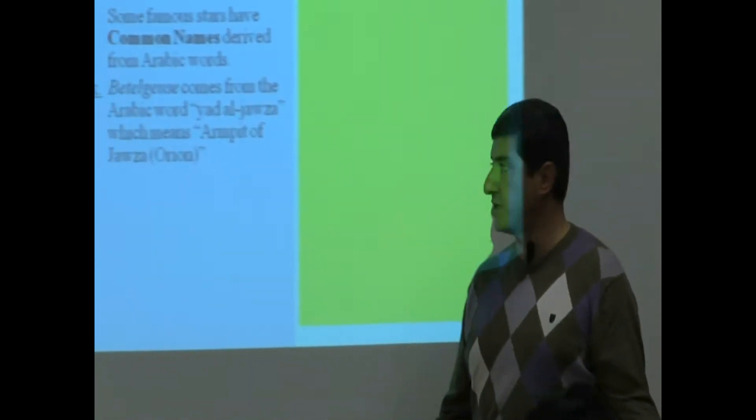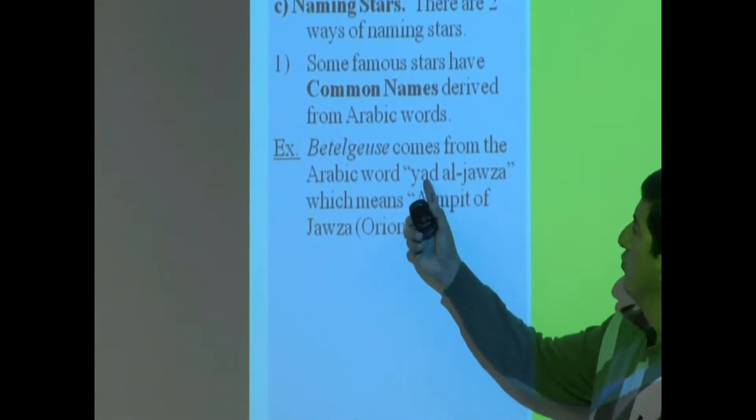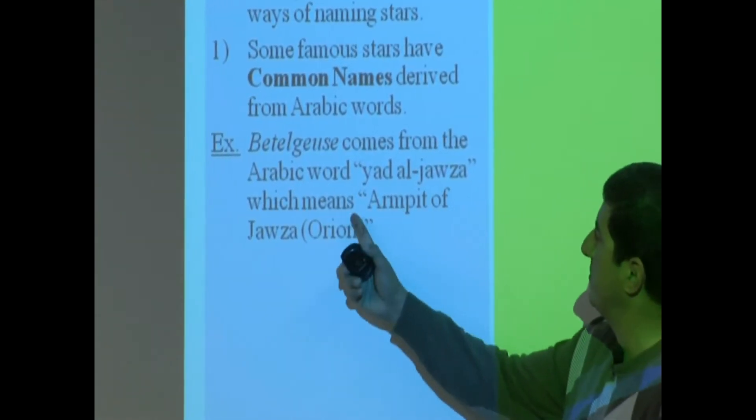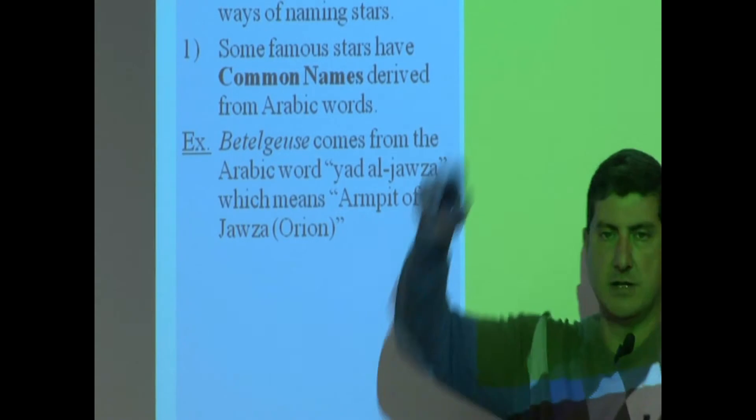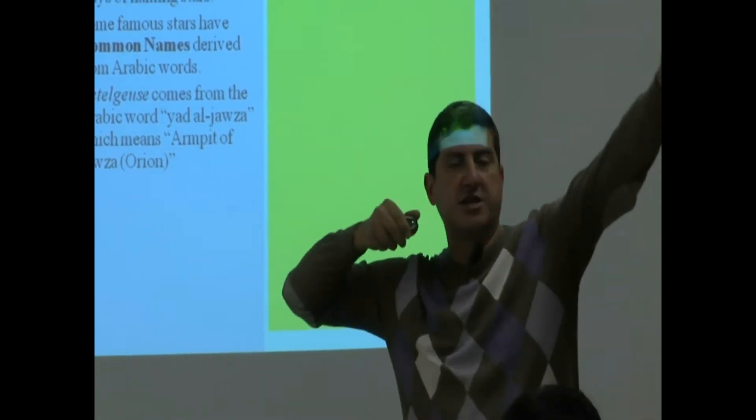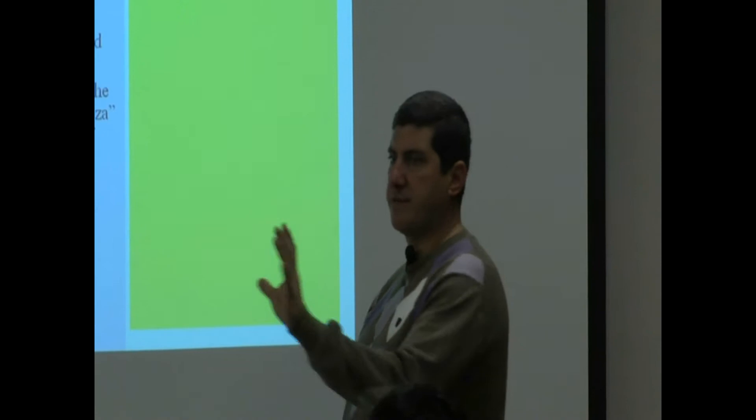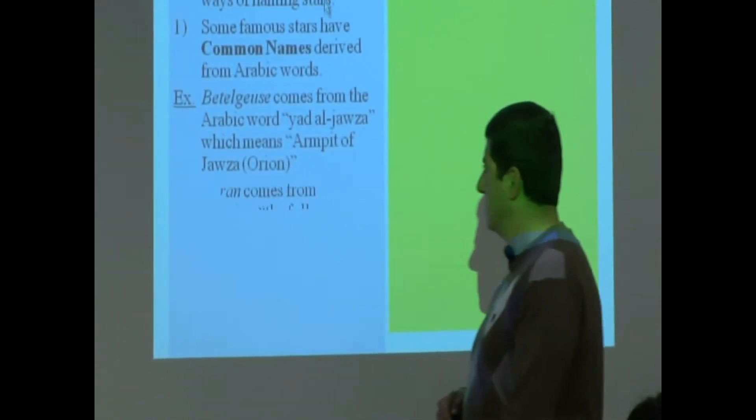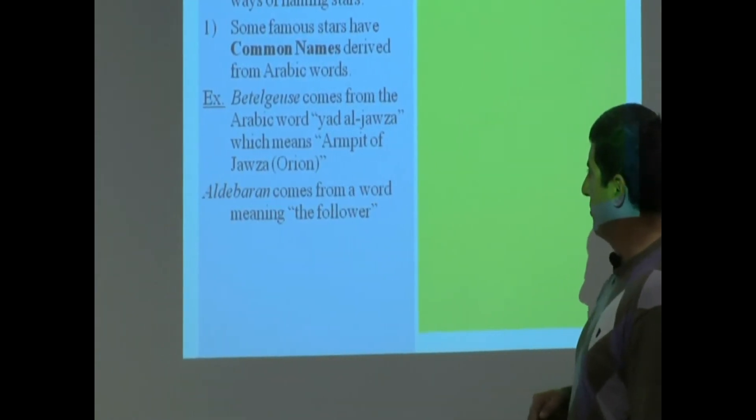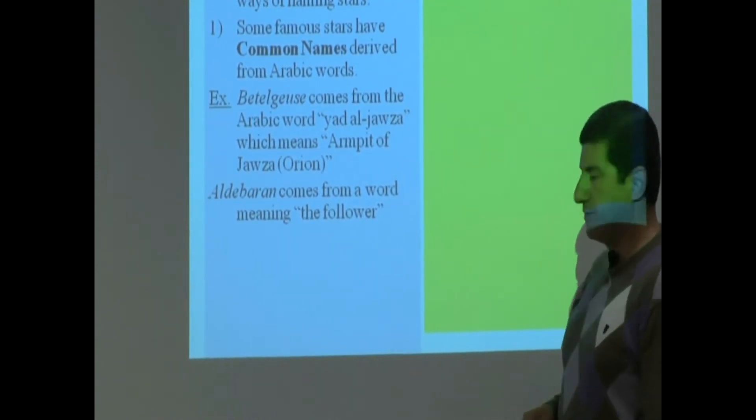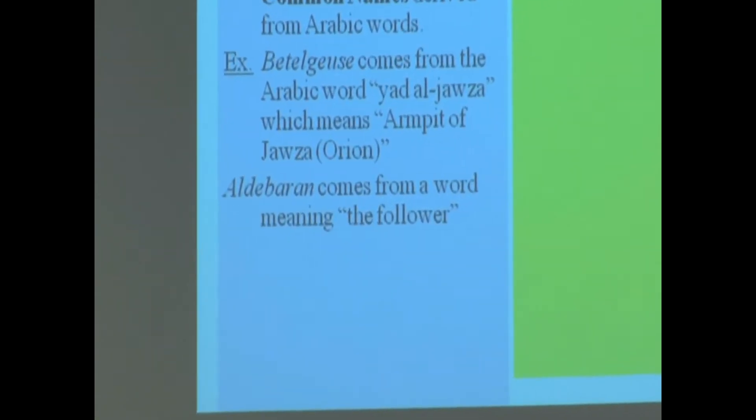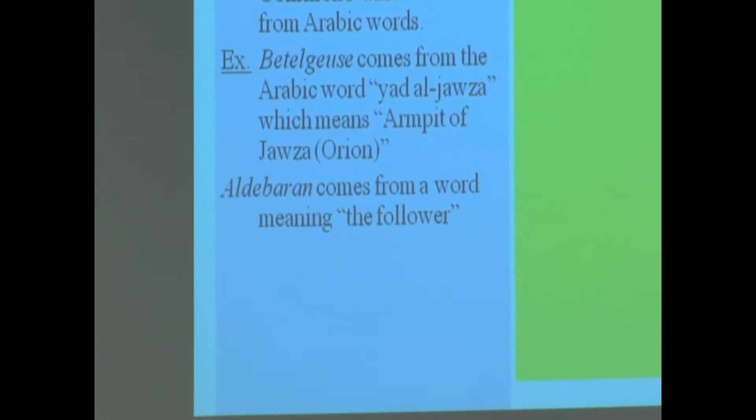For example, that star I keep referring to, Betelgeuse, its root word comes from the word 'yet al Jaza' which means armpit of Orion. Remember I said it's the armpit of Orion the hunter, so that's where the name Betelgeuse comes from. Aldebaran comes from a word meaning 'the follower' from Arabic word. If we look at this chart, we can keep looking at other examples.